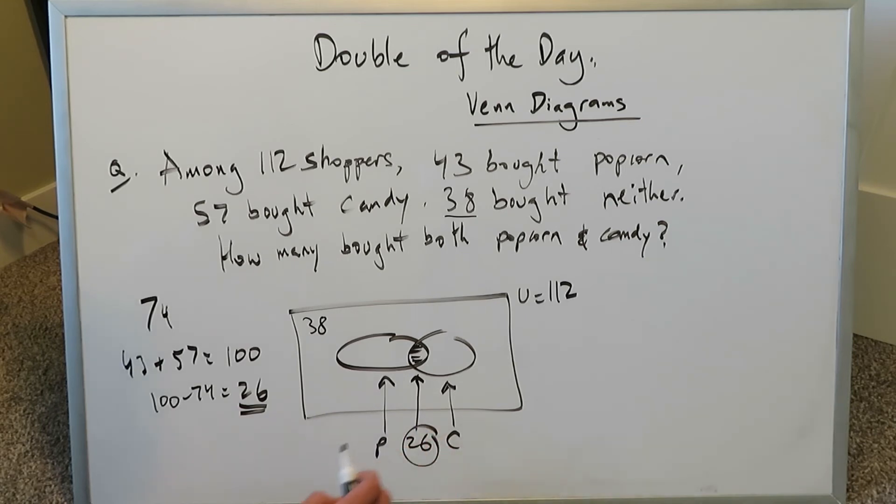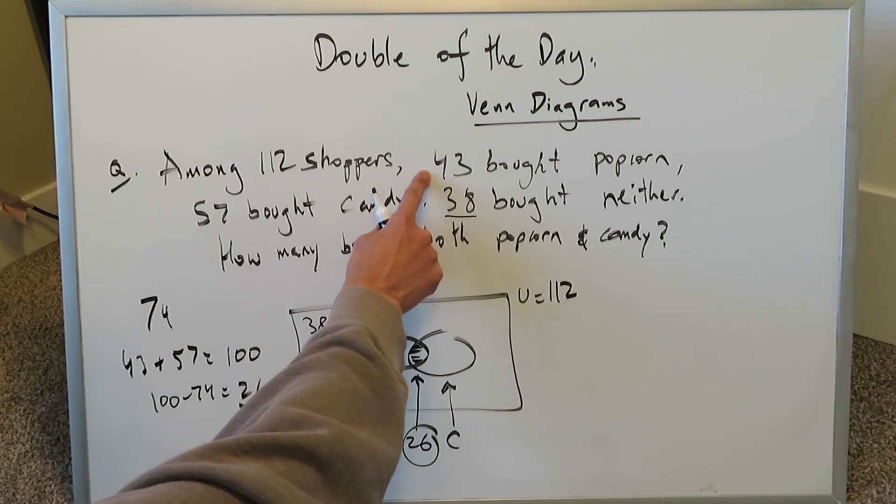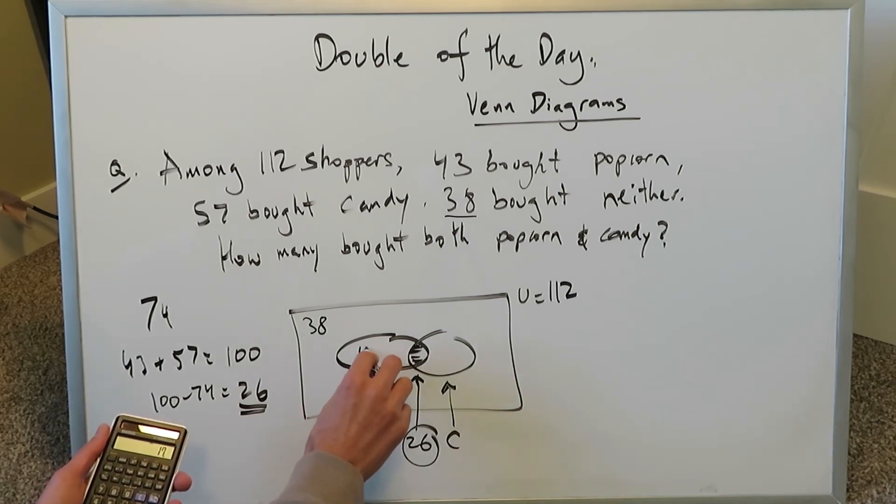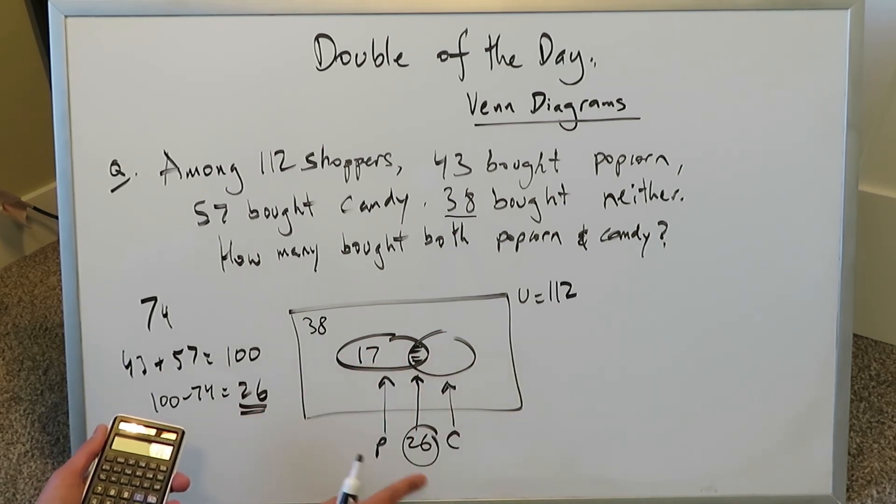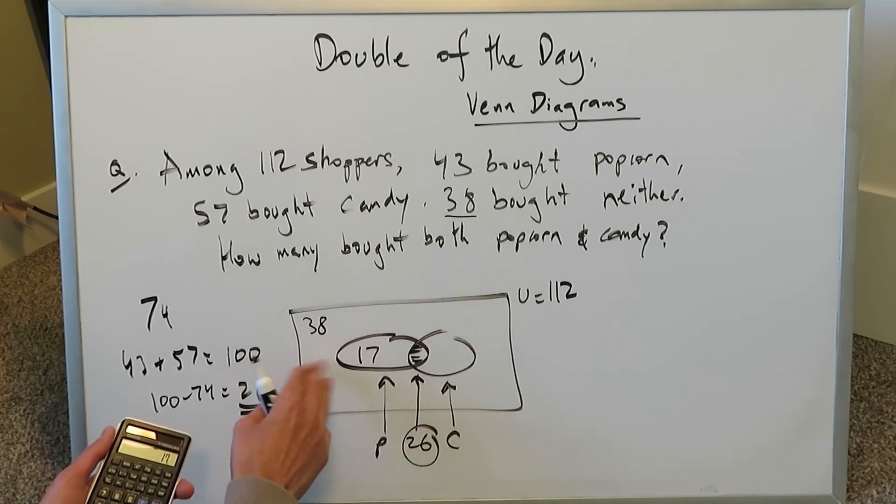We know 43 bought popcorn, but out of those 43, 26 also bought candy. You do 43 minus 26, and that gives you 17 people who bought popcorn only. But this 17 and this 26 will give you a total of 43 who bought popcorn, some of which bought only popcorn and some who bought popcorn and candy.